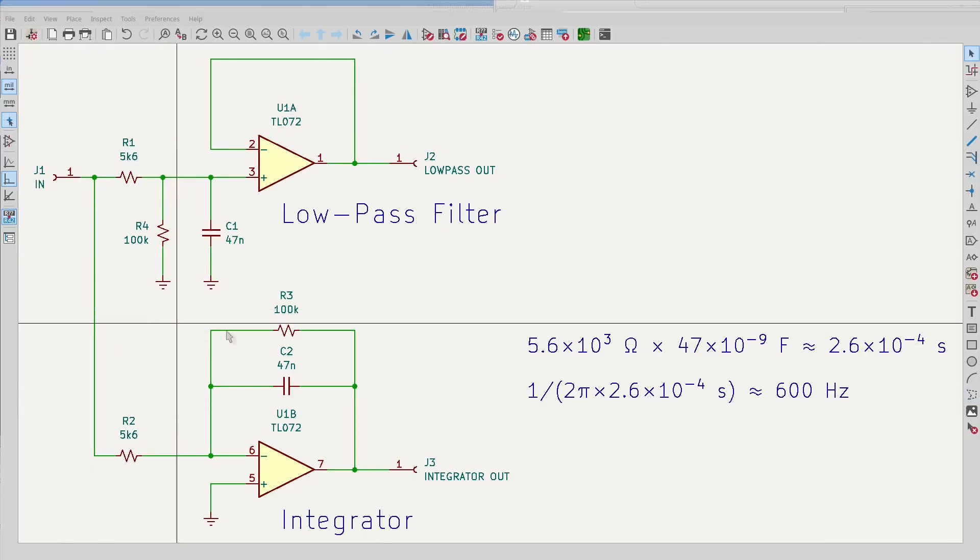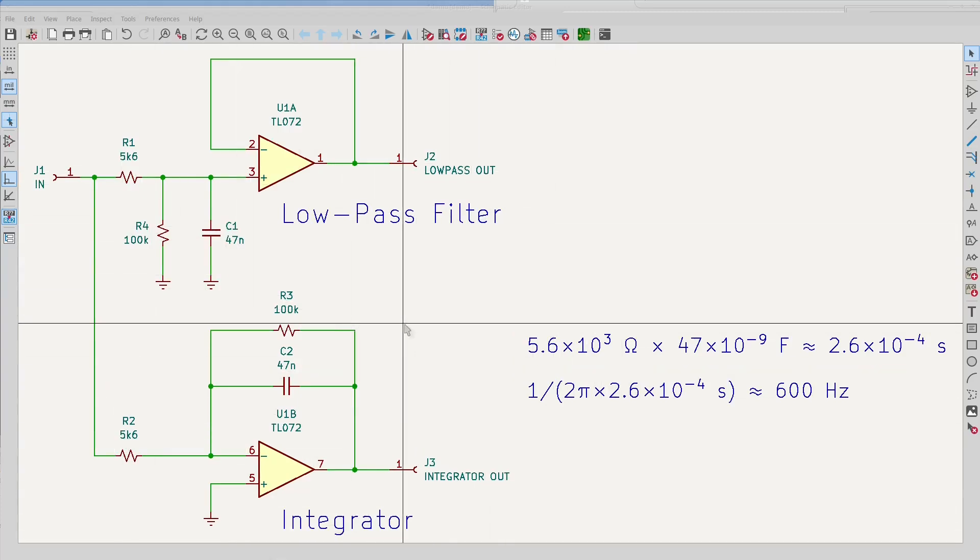Here I've drawn a first-order low-pass filter and an integrator with exactly the same component values. The RC time constant is about 260 microseconds. Equivalently, the critical frequency is about 600 Hz.